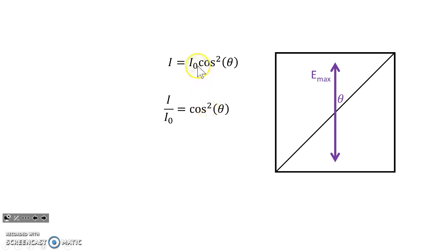If we divide both sides by the initial intensity, we can express this as a fraction, which tells us what percentage of the intensity is transmitted through the filter. Relative to the old amount, what percentage or fraction gets through.